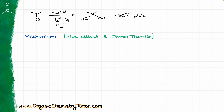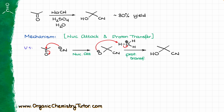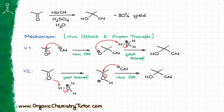However, depending on your textbook and your instructor, you might see those steps in two different orders. Some textbooks and instructors will show the nucleophilic attack first, giving you a negatively charged intermediate, and then do a proton transfer, giving you the final cyanohydrin. While others will do the proton transfer first, giving you a protonated intermediate, and then do a nucleophilic attack, giving you the final cyanohydrin.